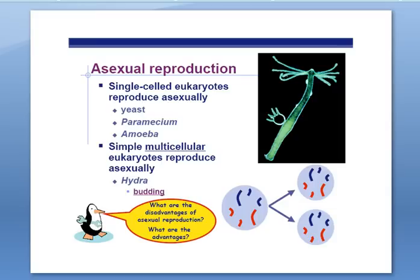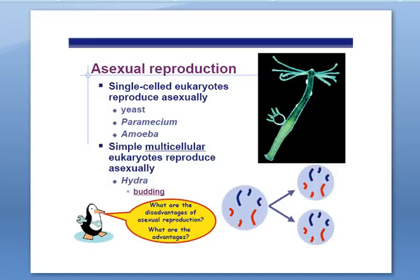Asexual reproduction is producing offspring without having two sources of genetic information. Single-celled eukaryotes like yeast, paramecium, and amoeba do single-celled reproduction by mitosis, called binary fission. We also have simple multicellular eukaryotes reproducing asexually — Hydra, a relative of jellyfish, produces a clone by budding in the process of mitosis.